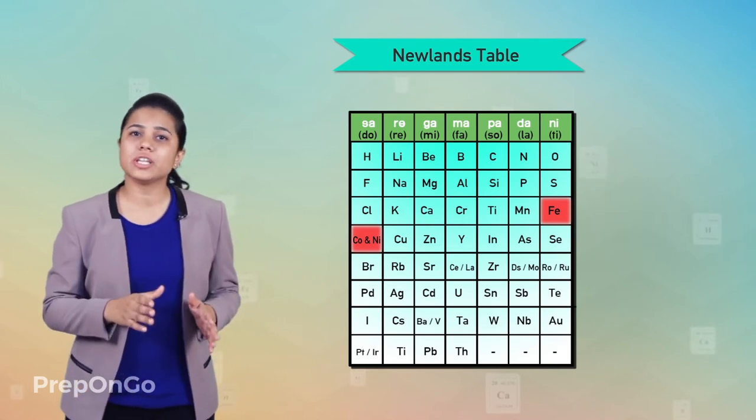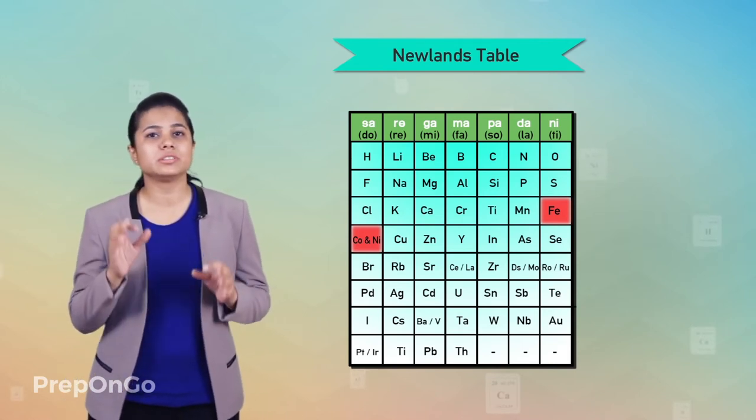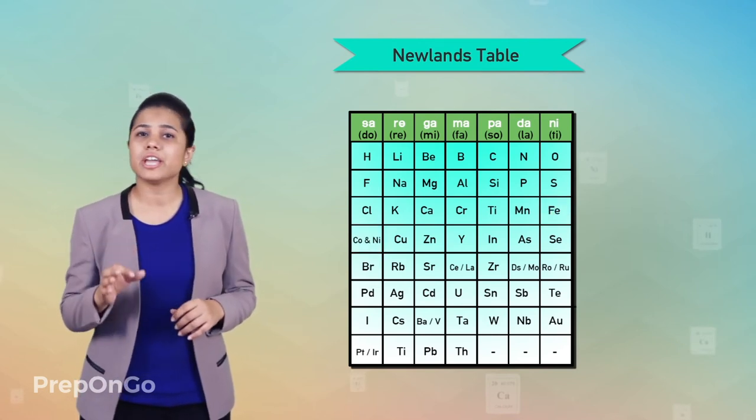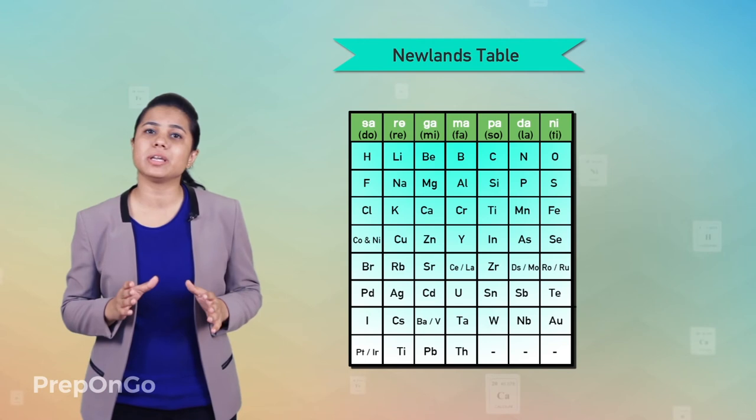As a result of this and many other problems, this theory failed to gain acceptance from other chemists. Therefore, the search for a classification method continued.